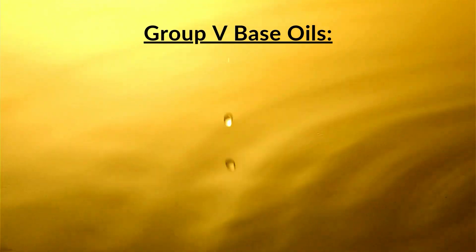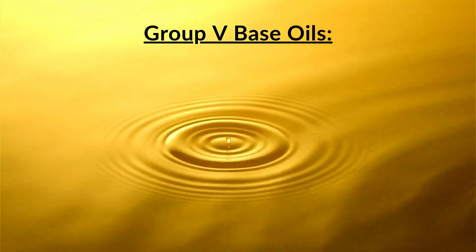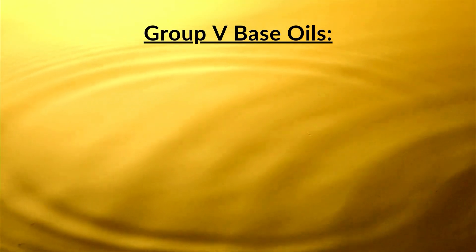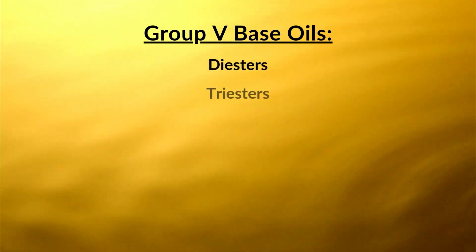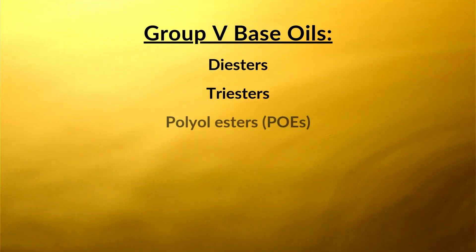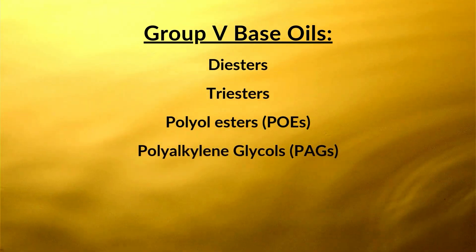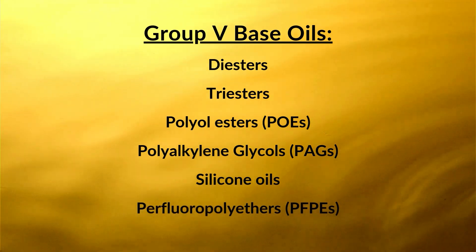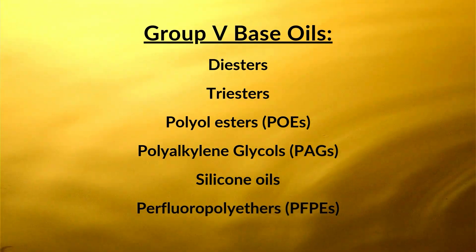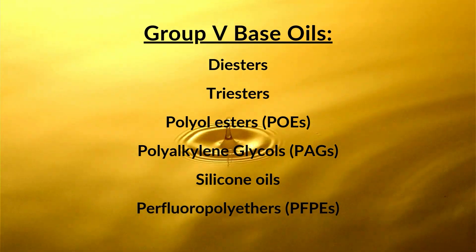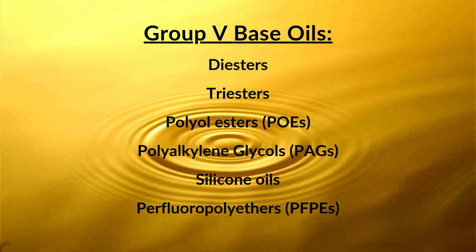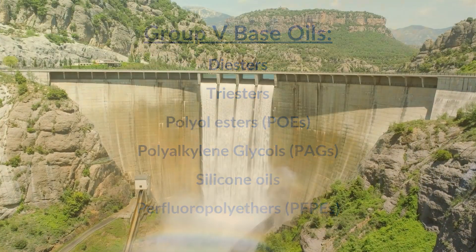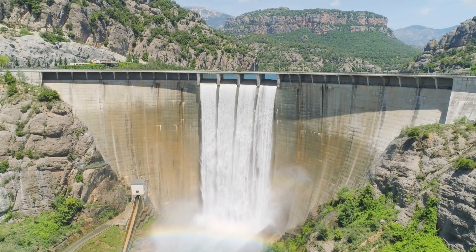Group 5 base oils are at the very top of the pyramid and encompass all other synthetic base oils. These include ester base oils such as diester, triester, and polyol esters, as well as polyalkylene glycols, silicone oils, and perfluoropolyethers. These Group 5 base oils are highly specialized synthetics generally used in extreme operating conditions.